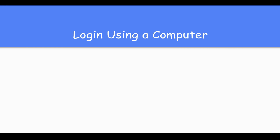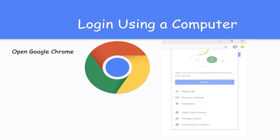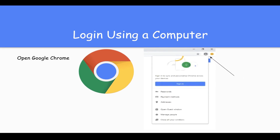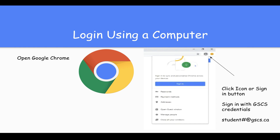Before you enter that code, you first need to open Google Chrome. From there, you need to click on the icon in the top right corner, then press sign in. If there's another user on the computer already logged in, you'll want to sign them out and sign in your student. They'll sign in using their GSCS credentials — that's their student number at gscs.ca.